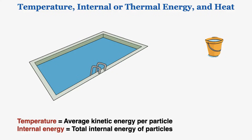Another example could be a heated pool with a lot of hot water inside. We take a bucket and take just a little bit of hot water out of the pool. Because the particles in the bucket are on average moving in the same way as the particles in the pool, the temperature of the pool is the same as the temperature of the water in the bucket. But because there are so many more particles in the pool than in the bucket, those particles must in total have more energy — there's more total thermal energy in the pool than in the bucket. That's another way of understanding the difference between temperature and internal energy.